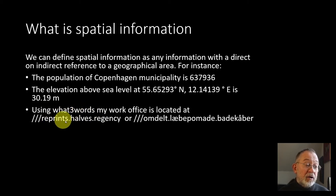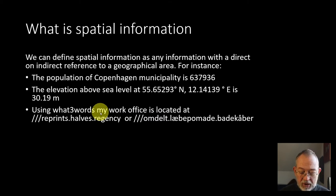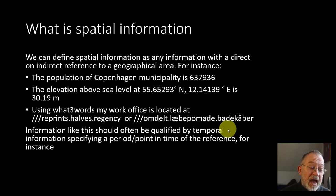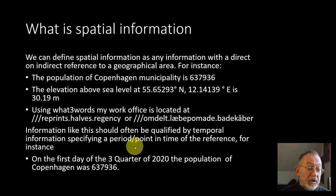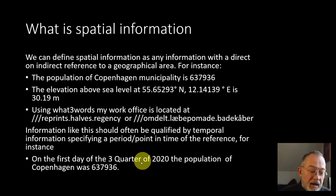What3words references anywhere within a three-by-three meter square using three words in basically any language. Common to all of these is that they reference somewhere in space. However, we often need to reference places also in time, so we need to add some temporal information for a period or point in time. For instance, we could say the population of Copenhagen was 637,969 at the first day of the third quarter of year 2020. We also call this spatio-temporal information.